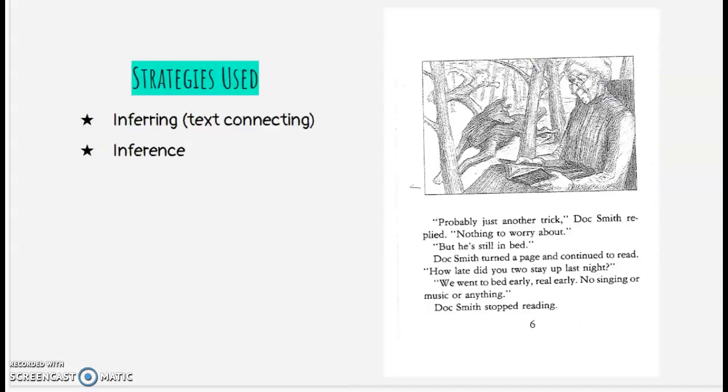And then on the next page, I did a text connection, because in the beginning Willie thought that his grandpa was just playing a trick on him, which Doc Smith also thought. So I was able to make those two connections and think that grandpa's kind of a trickster and he likes to play pranks on people. And then an inference that I made about them going to bed early with no singing or music or anything. I was just thinking that grandpa was not obnoxious, but just a man that was full of life and he enjoyed singing and music and just being lively and being cheerful. And so I just kind of thought that him going to bed early seemed very out of character for him as well.